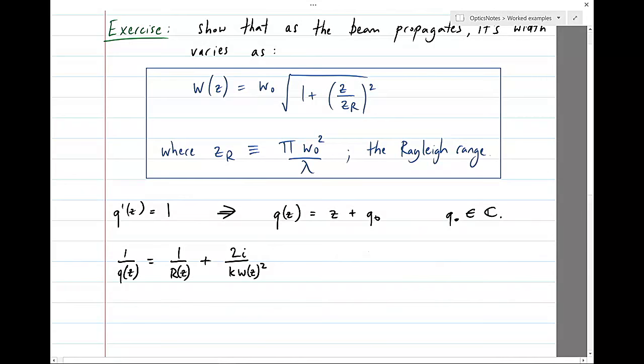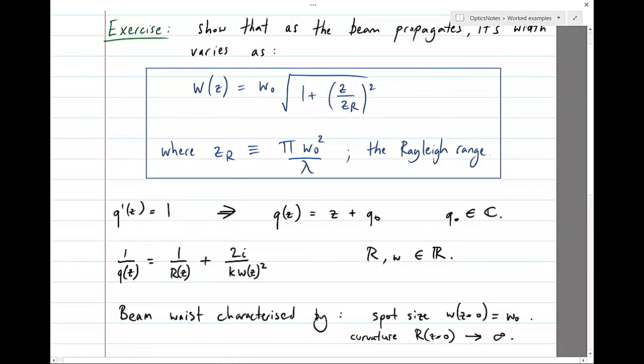Now the way we wrote down the real parts and imaginary parts of Q were like this. And we said that the radius of curvature R and the waist were going to be real numbers. So recall that at the beam waist, it's characterised by two things.